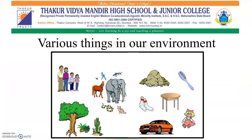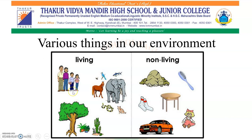There are various things in our environment as shown in the picture. All these things can be categorized under two main categories: living and non-living. Human beings, animals, birds, insects, and plants — all these come under the category of living things.